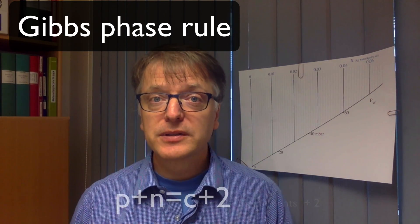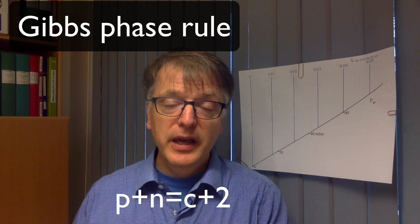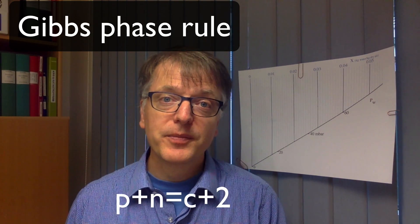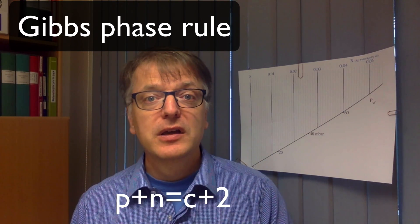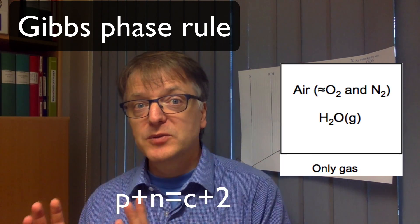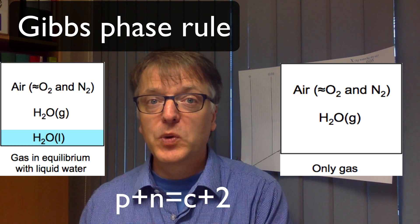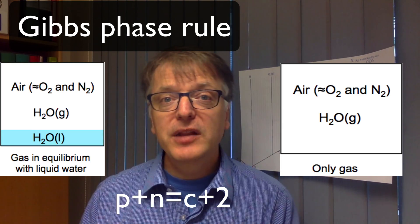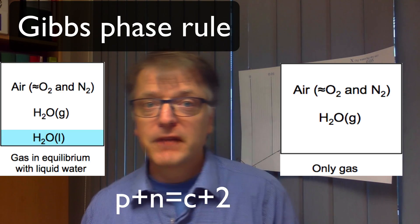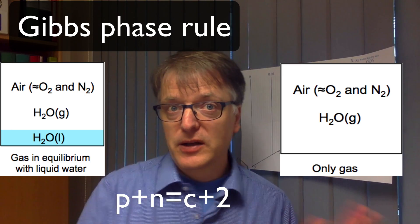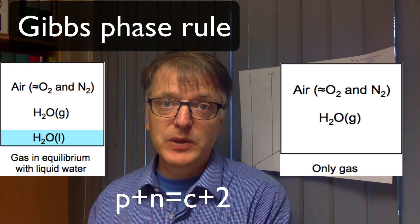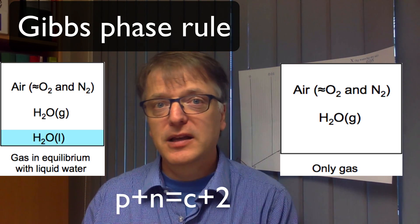So in our system, we have two components, right? We have air and water vapor. And then sometimes we have only gas and sometimes we have gas plus liquid water. So how many degrees of freedom do we have if we have only gas and if we have gas plus liquid? Take a few minutes and do that calculation.